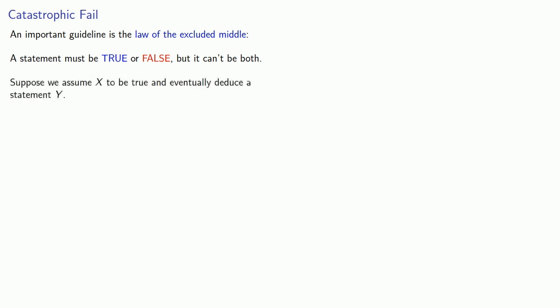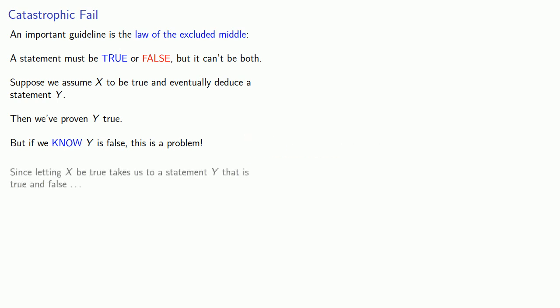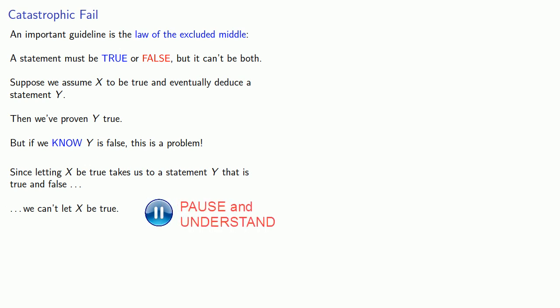Suppose we assume a statement x to be true and eventually deduce a statement y. Then we've proven y true. But if we know that y is in fact false, this is a problem. Since letting x be true takes us to a statement y that is both true and false, we can't let x be true. This is like recognizing that we're not supposed to be crossing a river, and so that means we got on the wrong bus.